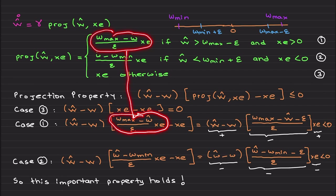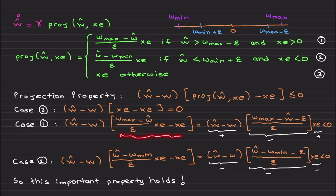For Case 1, I insert this into here. Grouping these terms under the same denominator, you get the term inside these brackets. Case 1 is activated when ŵ exceeds the w_max minus ε boundary and is moving toward w_max. First of all, ŵ minus w is positive...